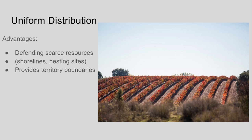With territorial birds, you have this sort of uniform distribution. They tend to have particular hunting areas, so you'll see one bird for so many square miles, another bird for so many square miles, with boundaries kind of marked out so it's easy for them to patrol their area. Which population distribution do you think you'd want to live in?